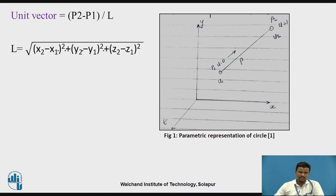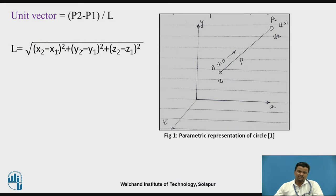The length of a line — how to calculate it? That is under root of (x2 minus x1) squared plus (y2 minus y1) squared plus (z2 minus z1) squared, where x, y, z are the coordinates. x1, y1, z1 and x2, y2, z2 are the start point and end point of the line respectively.